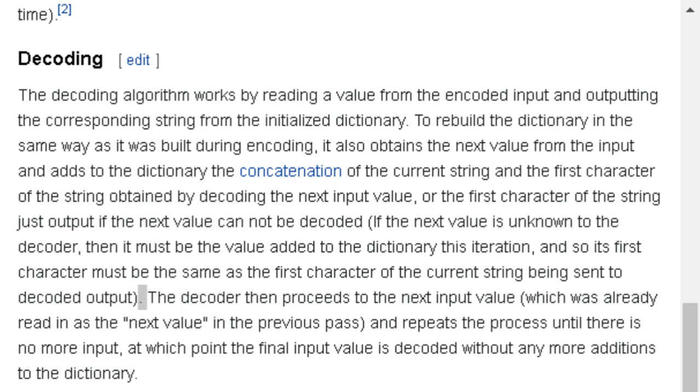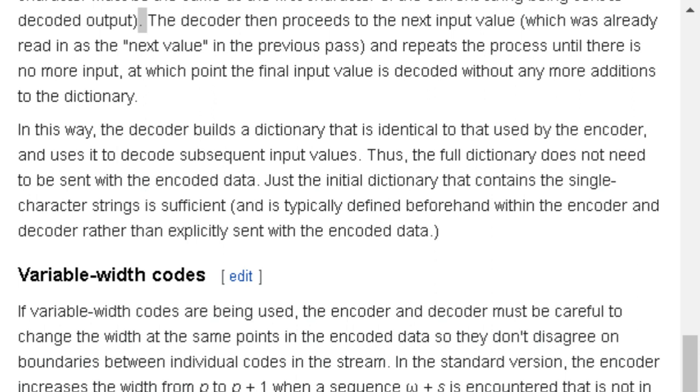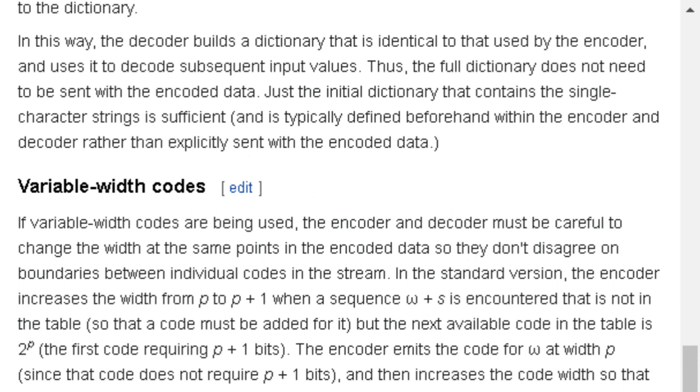The decoder then proceeds to the next input value, which was already read in as the next value in the previous pass, and repeats the process until there is no more input. At which point, the final input value is decoded without any more additions to the dictionary. In this way, the decoder builds a dictionary that is identical to that used by the encoder. Thus, the full dictionary does not need to be sent with the encoded data. Just the initial dictionary that contains the single character strings is sufficient and is typically defined beforehand within the encoder and decoder rather than explicitly sent with the encoded data.